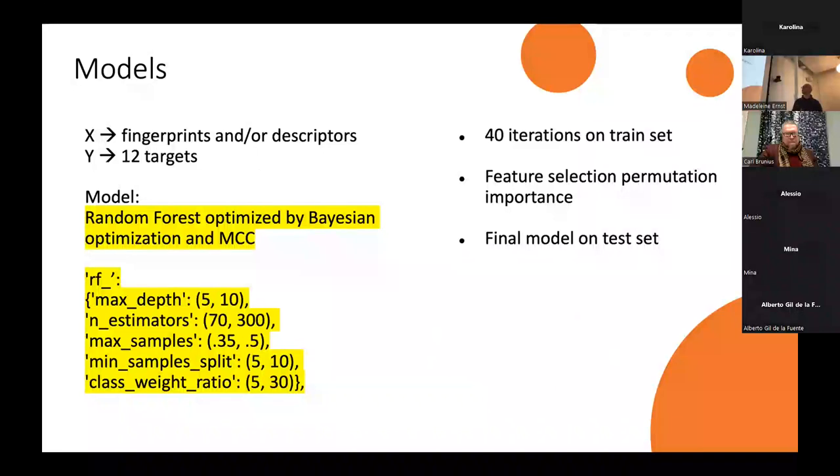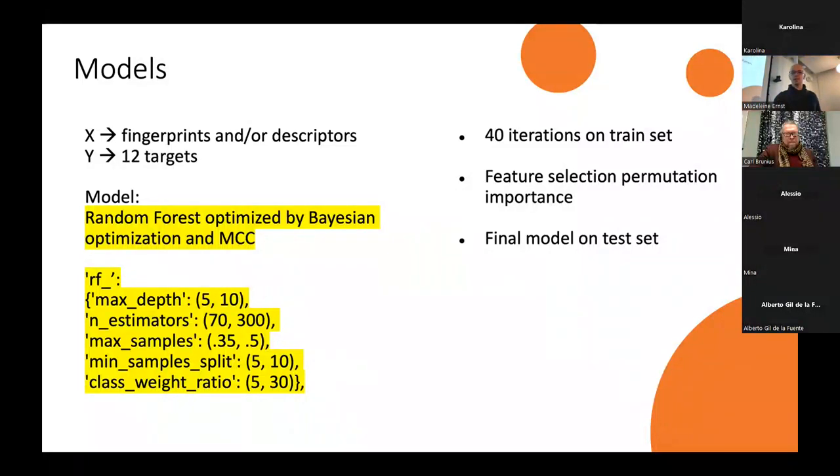I use Bayesian optimization and the matrix correlation coefficient as a metric to get the best out of my data. I tried 40 iterations on the train sets of different combinations of the hyperparameters. I have a lot of feature selection. I'm trying not to have big models and complex models, but more explainable and lightweight. And I do a test set on the model.